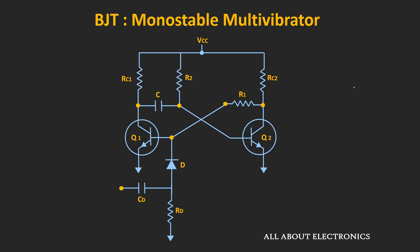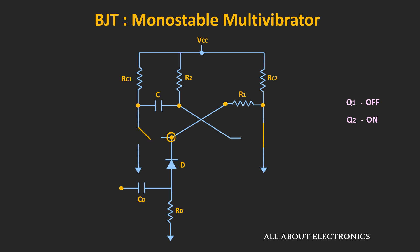Now let's see how this monostable multivibrator circuit works. When the circuit is powered up, transistor Q1 will be OFF while transistor Q2 will be ON. After power-up, both transistors try to conduct. But as Q2 conducts more and goes into saturation, it acts as a closed switch, and the voltage at the base of Q1 becomes approximately 0V. So Q1 operates in the cutoff region — Q1 is OFF, Q2 is ON.